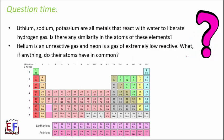Lithium, sodium, and potassium are all metals that react with water to liberate hydrogen gas. Is there any similarity in the atoms of these elements? All of them belong to the same group. Since they are in the same group, they have the same valency and the same valence electrons, and therefore their physical and chemical properties are similar.